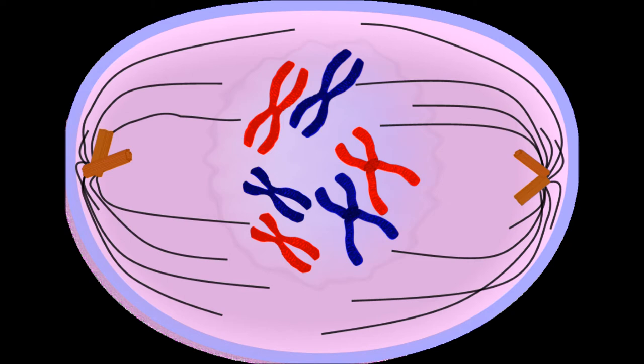Prometaphase. The nuclear membrane dissolves, marking the beginning of prometaphase. Proteins attach to the centromeres creating the kinetochores. Microtubules attach to the kinetochores and the chromosomes begin moving.